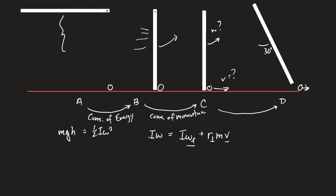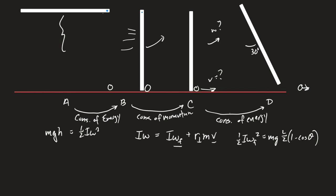Between C and D, conservation of energy for the bar: one-half I omega_final squared equals mg times L/2 times (1 minus cosine theta). This gives the final angular velocity of the bar after the collision. Combined with the collision equation, that gives you the velocity of the ball. I know the heavy lifting is done here — once you find both the initial and final angular velocity of the bar, you can find the ball's speed. The answer is going to be ugly, but the moment of inertia of a bar spun about its end is one-third mL squared.